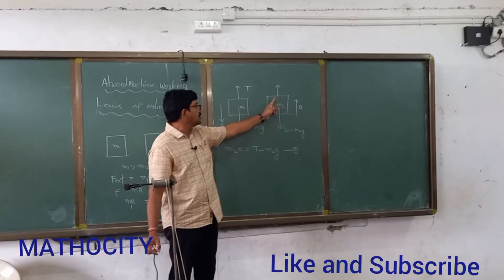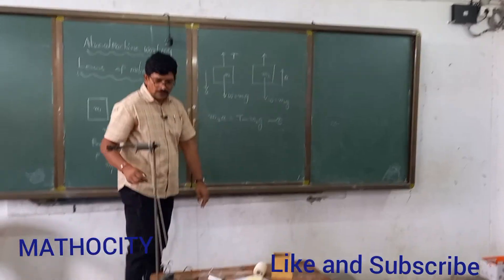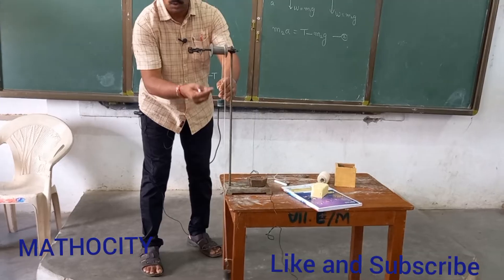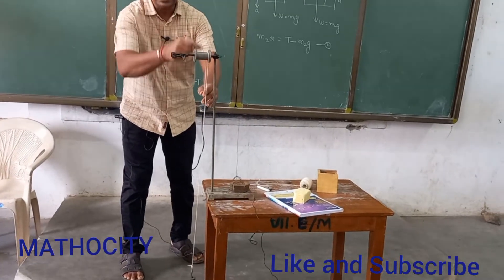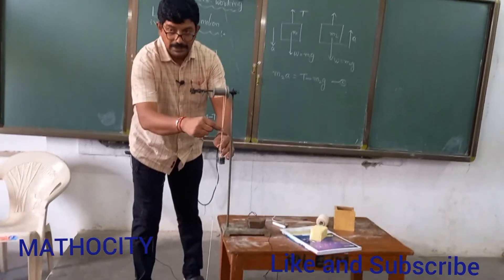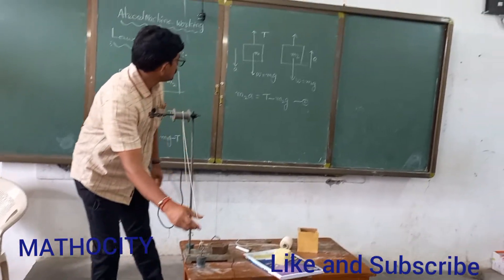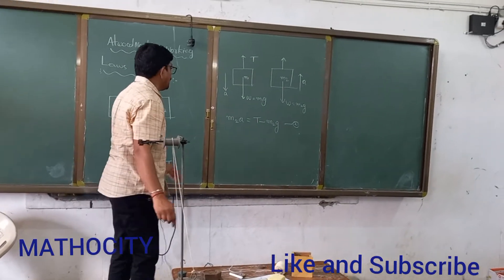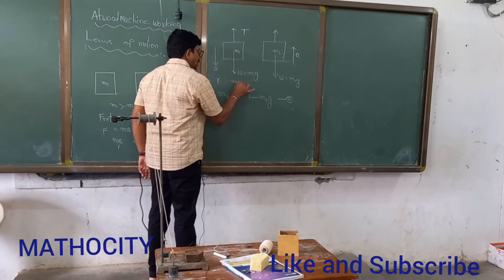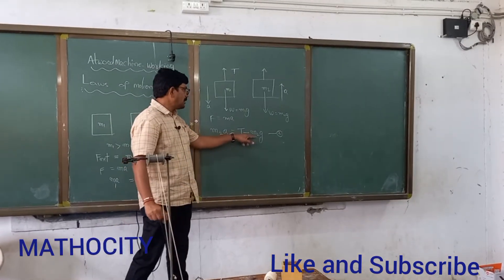Now come to the free body diagram of the second load M2. M2 is moving upward, and its acceleration is also in the upward direction — whereas for M1 the acceleration was in the downward direction. Applying Newton's second law F equals MA to M2: M2A equals T minus M2G. Why T minus M2G? Because M2 is less than M1, so tension exceeds the weight of M2.